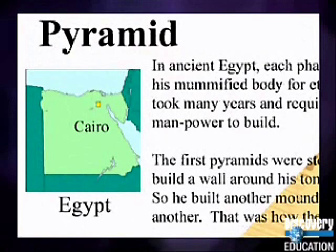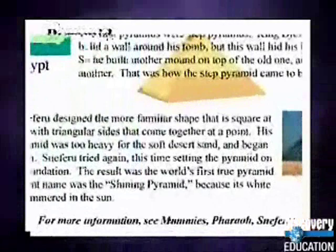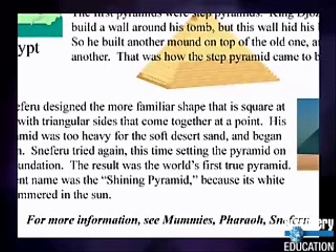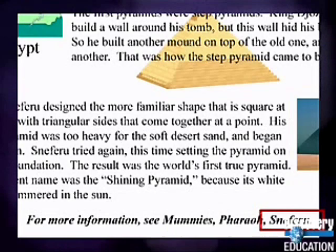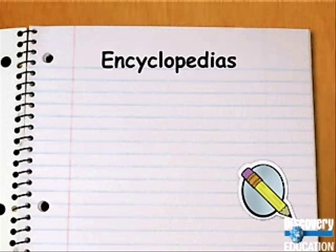At the end of each entry, there is a reference list that tells you other places in the volumes you might look. This entry tells us we could find more information by looking up key words: Mummies, Pharaoh, and Sneferu. Encyclopedias are sets of reference books or computer CDs full of information about many different subjects. Look up the word pyramid in your encyclopedia and see what maps or pictures your encyclopedia includes.